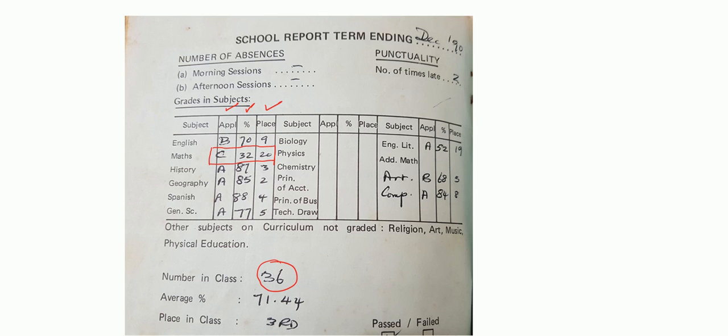So if you notice, I got 32 out of 100, I placed 20th in the class and I got a grade C. Now throughout the years I've had good teachers and I've had bad teachers. So in form 1 I had a teacher who really didn't teach us that much.